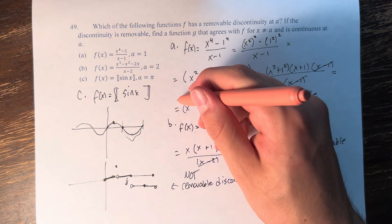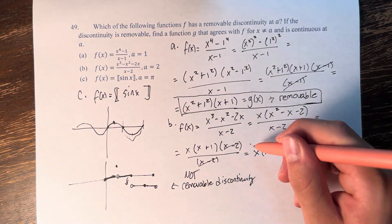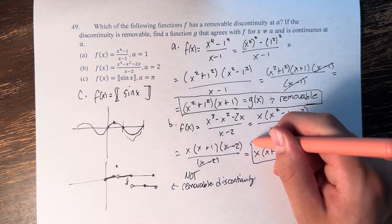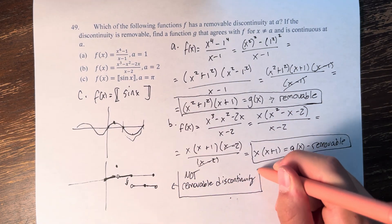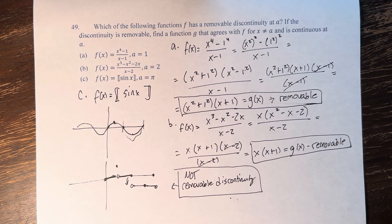So we have a is removable with that g of x, b is removable with that g of x, and c is not removable and therefore has no g of x.